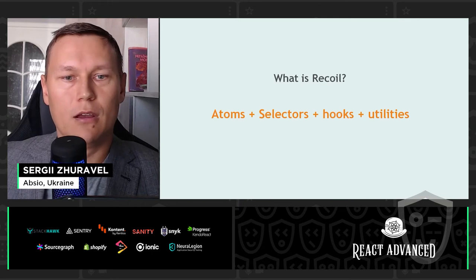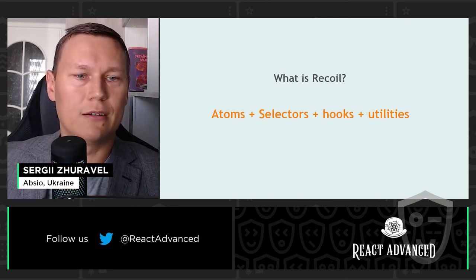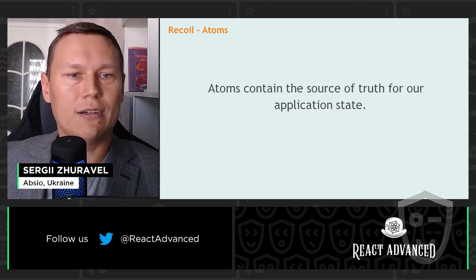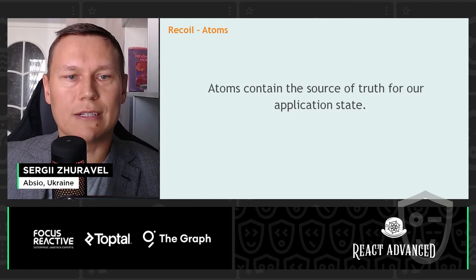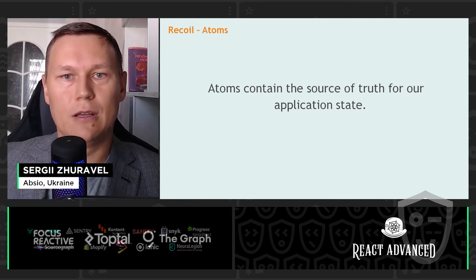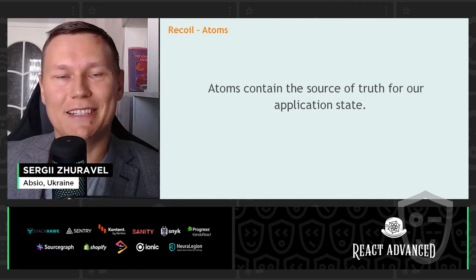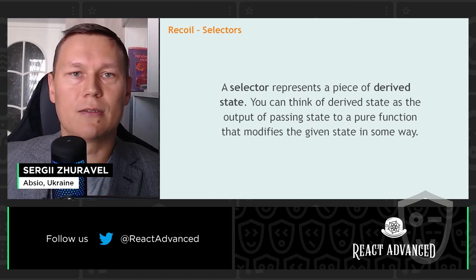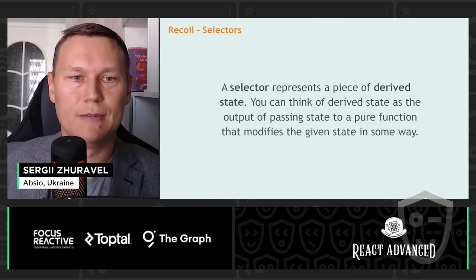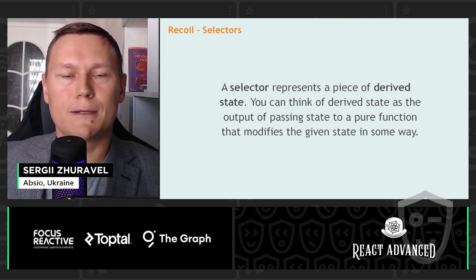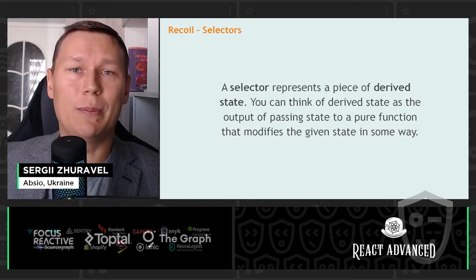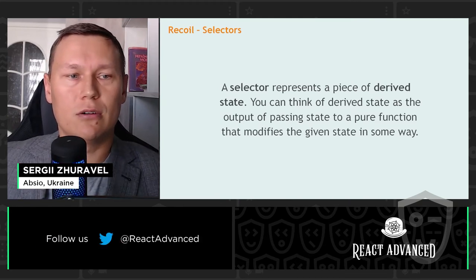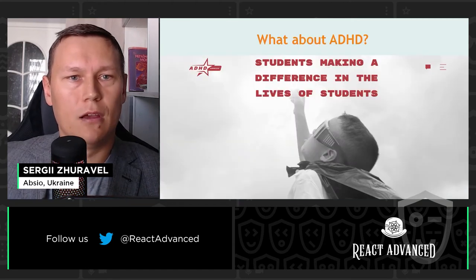So what is Recoil? I created a simple formula: Recoil equals atoms plus selectors plus hooks plus utilities. Atoms contain the source of truth for our application state — comparing with Redux, it's like slices of our state. Selectors represent a piece of derived state. Those who've used Redux probably used a library like reselect — selectors in Recoil are quite similar to that.